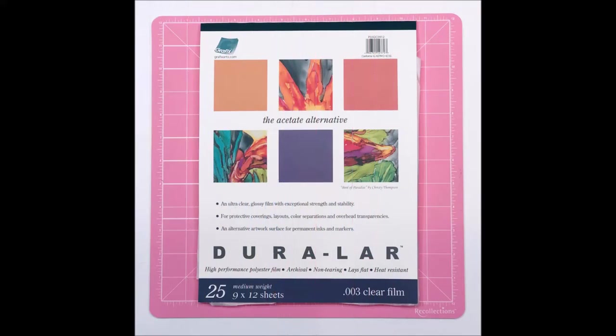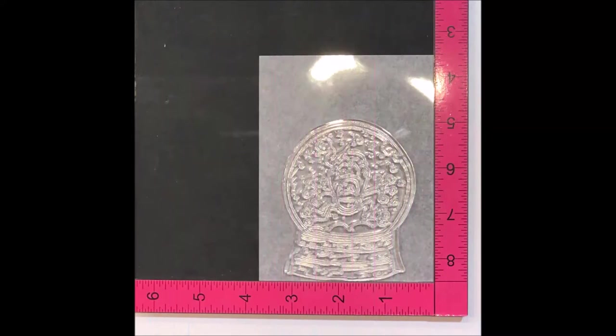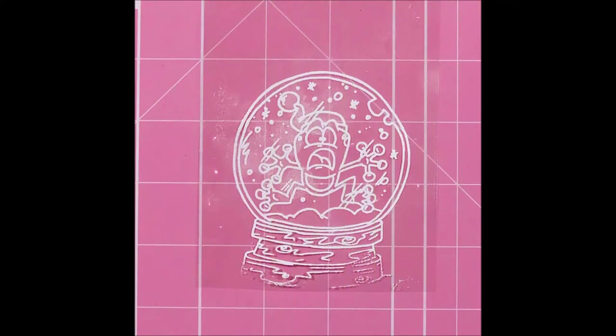I'm going to be using Duralar, which is an acetate alternative, but it's heat resistant so I can do some heat embossing on it. I left the Duralar on the protective tissue paper so that it would be easier for you to see during this process. I used my MISTI to stamp the image and then I used my heat gun to heat emboss it. I chose to use white embossing powder because of all the snow in the snow globe. And no, I didn't mess up. I really didn't need to emboss the base of the snow globe.